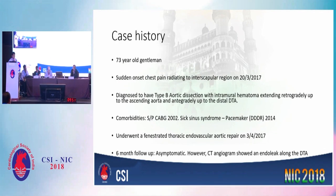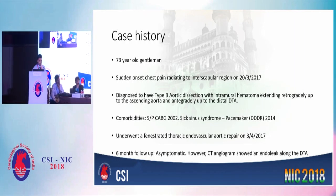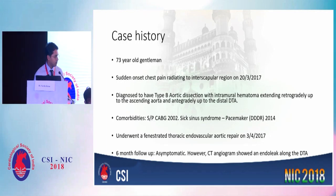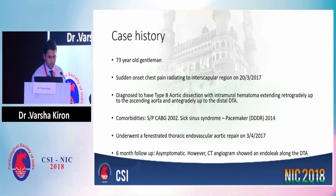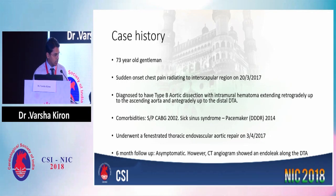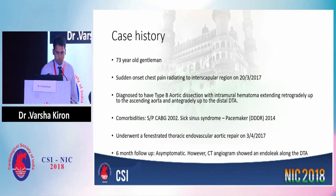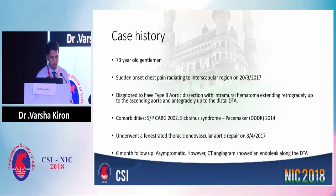This is a 73-year-old gentleman who had come to us initially in March 2017 with sudden onset chest pain radiating to the interscapular region. He was diagnosed to have a type B aortic dissection with an intramural hematoma extending retrogradely up to the ascending aorta and antegradely to the distal DTA. He is also post-CABG done in 2002 and post-pacemaker implantation for symptomatic sick sinus syndrome in 2014. We did a fenestrated thoracic endovascular aortic repair in April 2017.